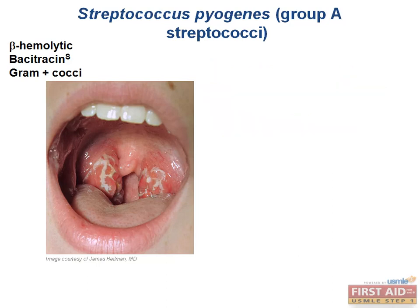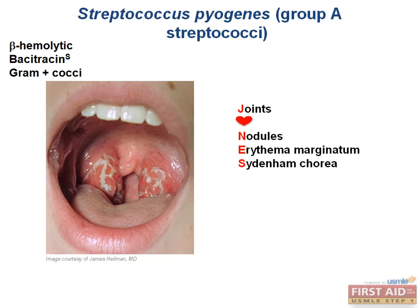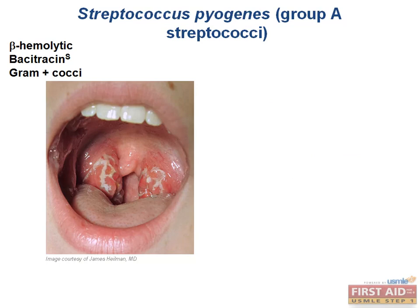The Jones criteria mnemonic: J-O-N-E-S. Joints are affected (typically polyarthritis); the O represents the heart, signifying carditis (which can be endocarditis, myocarditis, or epicarditis — any layer); N is for nodules (typically subcutaneous); E is for erythema marginatum; and S is for Sydenham chorea. Glomerulonephritis is another complication of strep pyogenes infections, discussed further in the renal chapter.